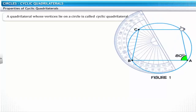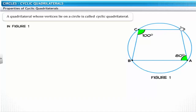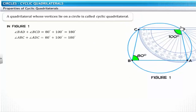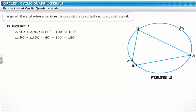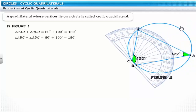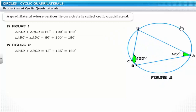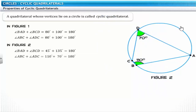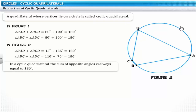Here is a very interesting property of cyclic quadrilaterals. Let us measure the opposite angles BAD and BCD — note that their sum is equal to 180 degrees. Now measure the opposite angles ABC and ADC — their sum is also equal to 180 degrees. This illustrates the theorem that in a cyclic quadrilateral, the sum of opposite angles is always equal to 180 degrees.